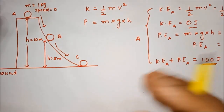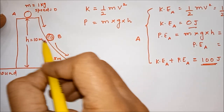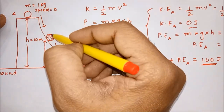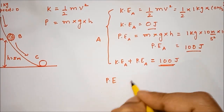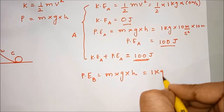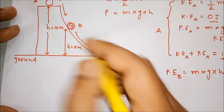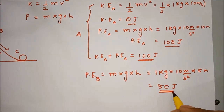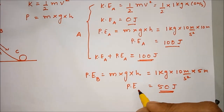Let us consider the same situation but for the ball at position B. Now when the ball slides down, it will have gained some speed when it reaches point B. But since the ball came down, the height of the ball decreased. For B, potential energy at B equals mgh, that is 1 kg into 10 meter per second squared into height at B which is 5 meters, and we get our answer as 50 joule. Earlier it was 100 joule, so the potential energy reduced to half of its value at the top.